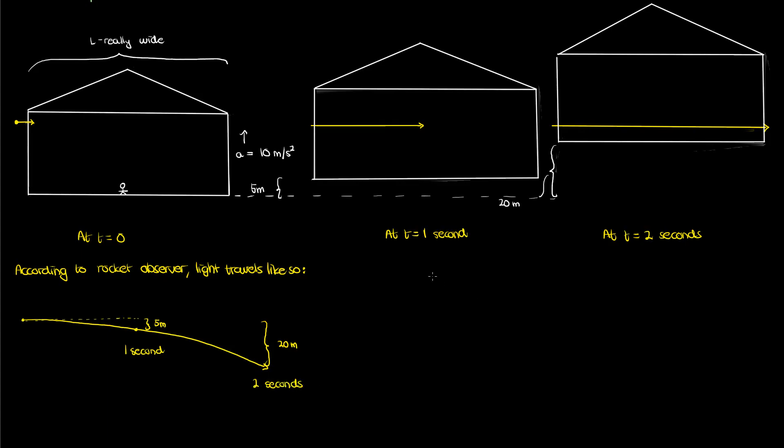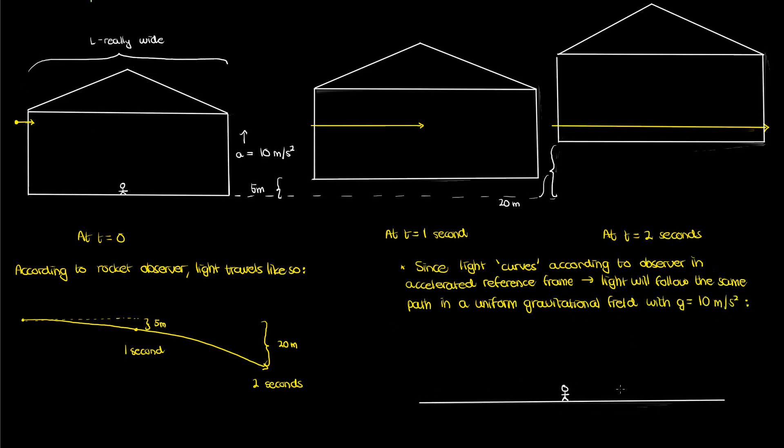So instead of traveling in a straight horizontal line like it did for the inertial observer who's viewing this from afar, the ray of light curves down according to somebody in the accelerated rocket. By the equivalence principle this means that light will then follow the exact same path in a uniform gravitational field where the gravitational acceleration is 10 meters per second squared. So just like how light curved downwards according to the rocket observer, light will also curve downwards according to someone sitting in a uniform gravitational field with the same gravitational acceleration. This is a pretty powerful conclusion because we've shown just from the equivalence principle that light bends under the influence of gravity. Gravity curves light.